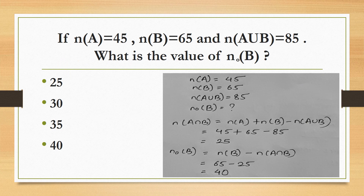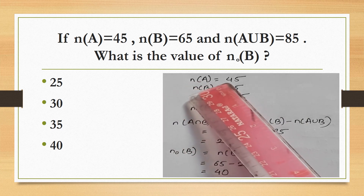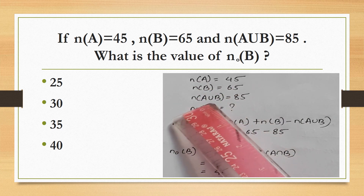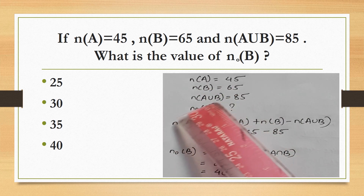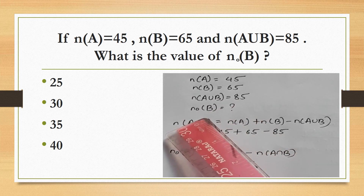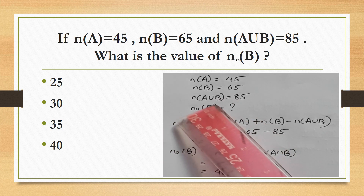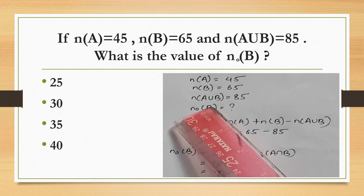If n(A) equals 45, n(B) equals 65, and n(A union B) equals 85, what is the value of n(only B)? So we have n(A) = 45, n(B) = 65, n(A union B) = 85. We need to find n(only B).